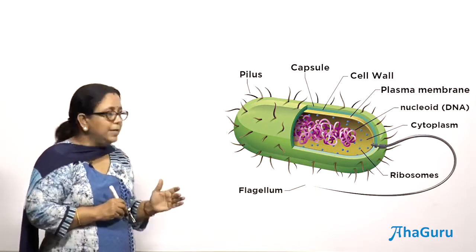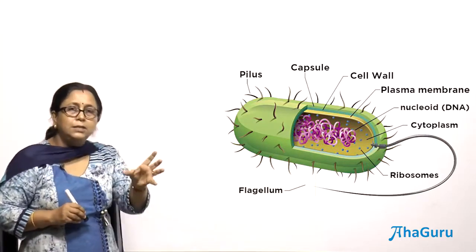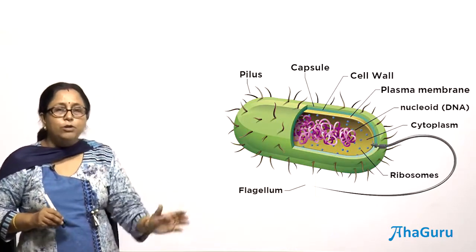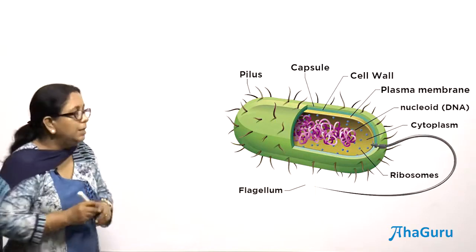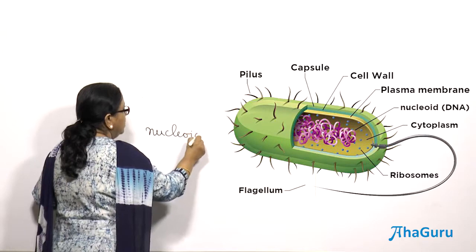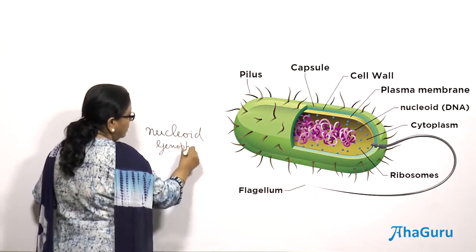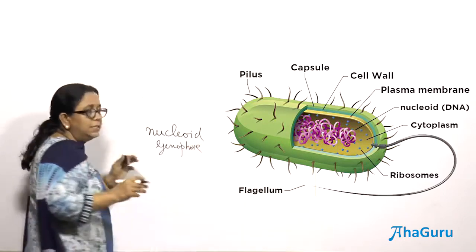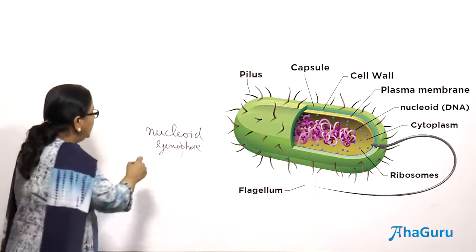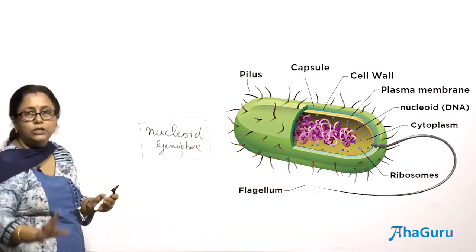It is circular double-stranded DNA, but it is not found inside a nucleus. It is found floating in the cytoplasm. The place where you find the DNA in the bacterium is known as the nucleoid — sometimes they also use the word genophore. This is where the double-stranded circular DNA is bundled up in a region called the nucleoid, and it is not membrane-bound.